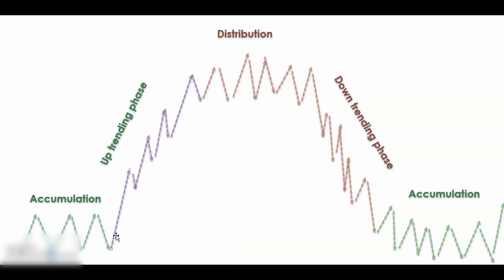When you're trading stocks, always make sure to understand what phase you are currently in. We always have an accumulation phase, an uptrending phase, a distribution phase, a downtrending phase, and then it all starts again. The accumulation phase is basically a sideways phase where the market is setting up either for an uptrend or a downtrend. When we see sideways price action, it will eventually break up or break down.